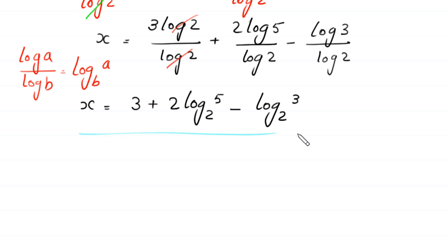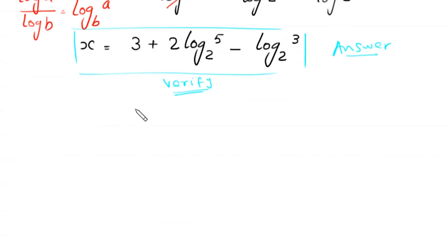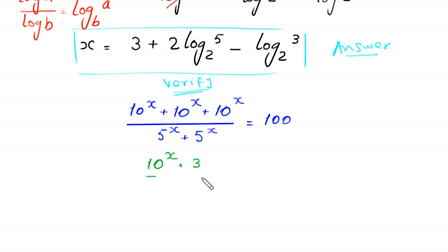This is the final value of x and the final answer of this equation. Now, let us verify this value of x by putting it back into the original equation. The original equation is 10 to the power x plus 10 to the power x plus 10 to the power x, divided by 5 to the power x plus 5 to the power x, equals 100. The left-hand side simplifies to 10 to the power x times 3 divided by 5 to the power x times 2, equal to 100.